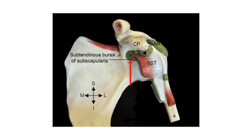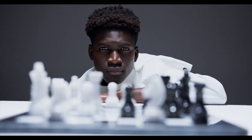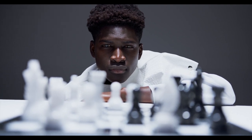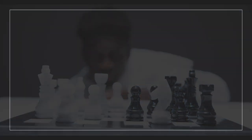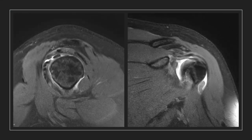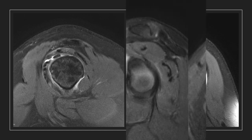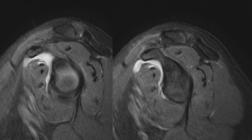Furthermore, understanding the communication between the subtendinous bursa of the subscapularis and the intra-articular space gives insight into the pain generator and helps in selecting the appropriate procedure among various options. MRI imaging is a great way to expand our 3D understanding of each structure. For example, the coracobrachial bursa and subtendinous bursa of the subscapularis are seen to communicate in this case.